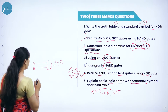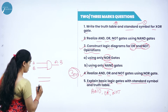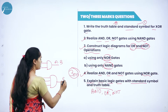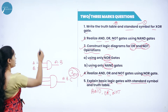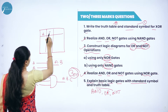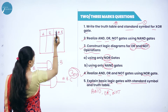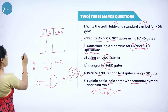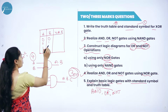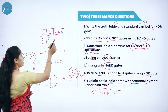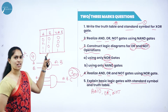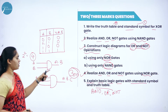For AND gate: it takes two or more input signals but produces only one output signal; it is like logical multiplication. When all input signals are high, the output will be high. For two inputs, output is A dot B; for three inputs, output is A dot B dot C. The truth table has two variables, so 2 power 2 equals 4 possibilities: 0·0=0, 0·1=0, 1·0=0, 1·1=1. Output is high only when all input signals are high.